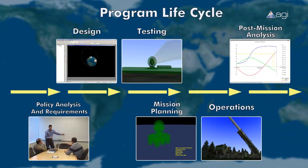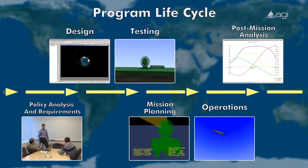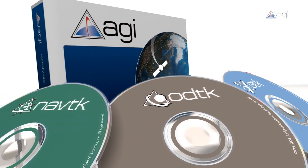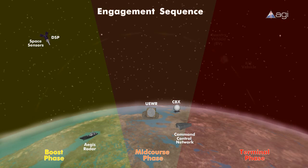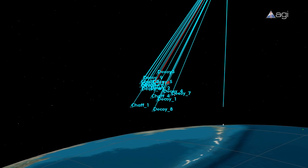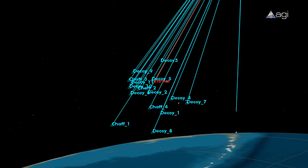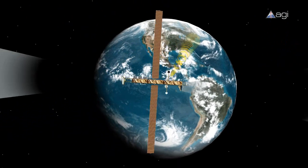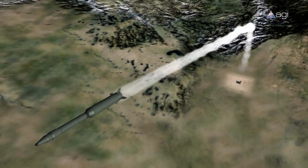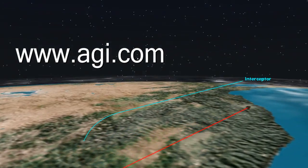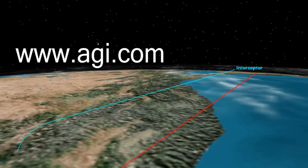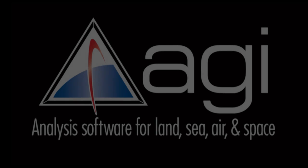From testing through operational deployment, Analytical Graphics' suite of commercially available off-the-shelf software tools provides our customers with the ability to model, analyze, and visualize missile defense systems as they apply to space surveillance and object identification, communications architecture, and ballistic missile threats. Visit AGI.com and join the many missile defense programs already using our solutions by requesting our software today.